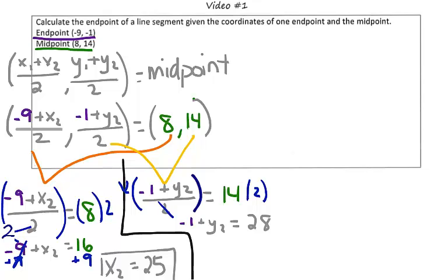And we're left with negative 1 plus some y value is equal to 28. Using inverse operations, add 1 to both sides. So we get the y value of our endpoint must be 29.